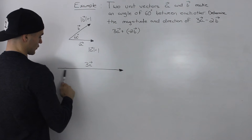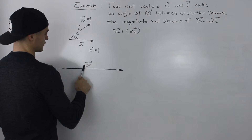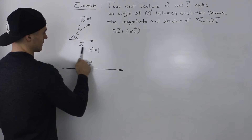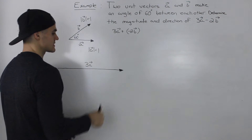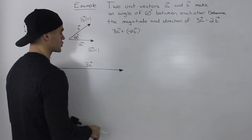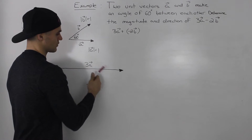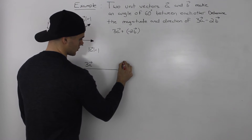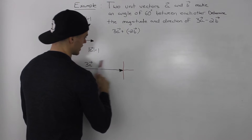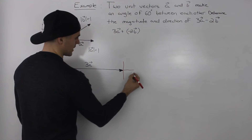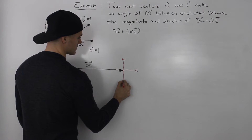Starting off with vector 3A: it should be triple the length of vector A, and since it's a positive scalar, it goes in the same direction. To add the vector negative 2B to 3A, I'm going to draw a little compass on the tip of vector 3A — marking east, north, and south.